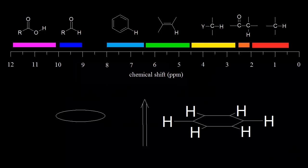In this video we're going to talk about diamagnetic anisotropy. We talked about diamagnetism in an earlier video and we used current in a loop of wire as an analogy. If current is moving in this direction in a loop of wire — I represents current — a magnetic field is created. At the very center of this loop, the magnetic field is pointing straight down. As you move away from the center, I can draw in some more magnetic field lines.